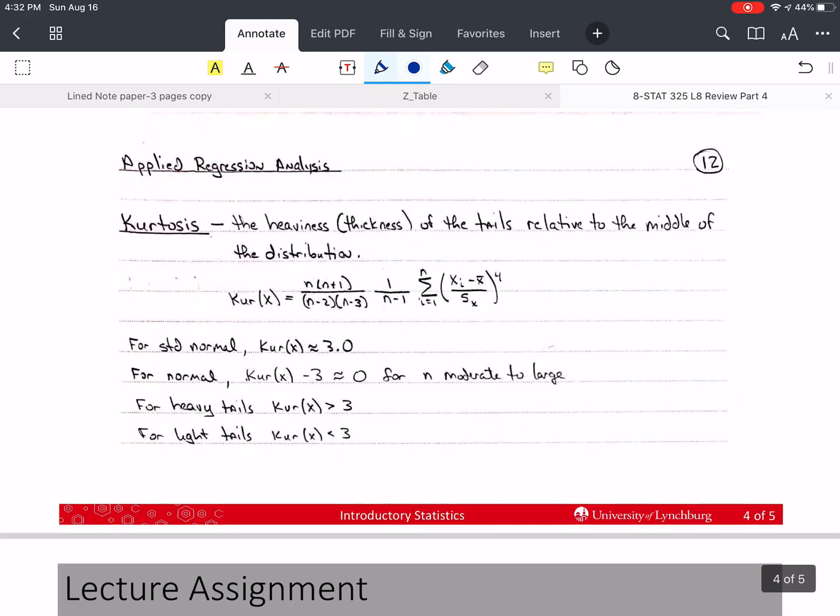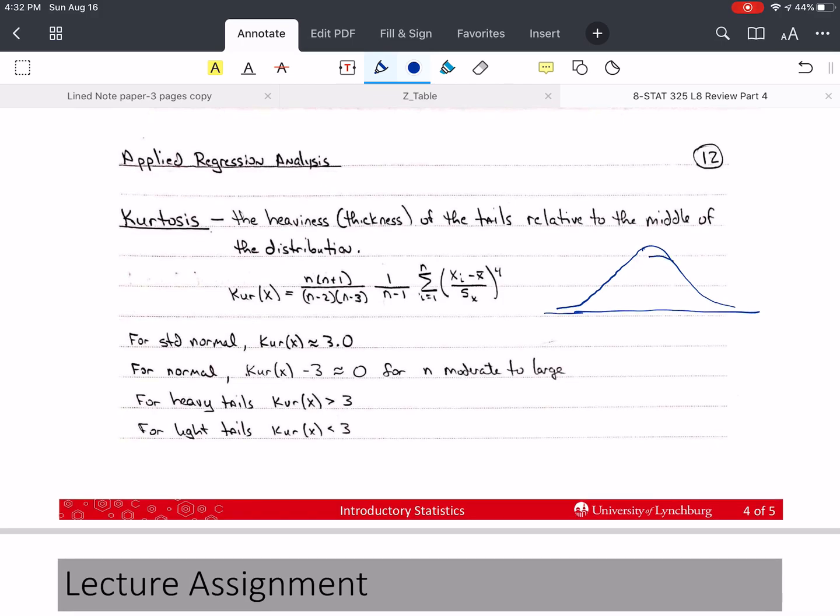Now the kurtosis. This is how thick or heavy the tails are. If I have a normal distribution, the tails should not be very thick. If I have another distribution and the tails are thicker, then the kurtosis will be bigger or larger. We can calculate it with this formula, but again, the computer does this pretty easily.